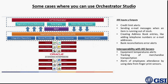Orchestrator can be used in different cases such as creating credit limit alerts, sending email messages when an item is running out of stock, creating address book entries like adding telephone numbers and email addresses, creating bank reconciliation error alerts. Also, when integrated with AIS server, you can create equipment temperature alerts, track merchandise transport stations, and create alerts of employees' attendance to work by using fingerprint sensors.